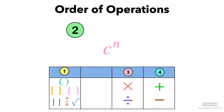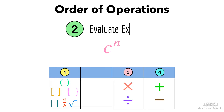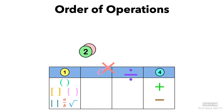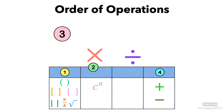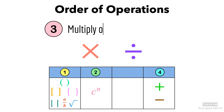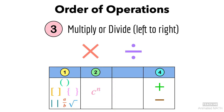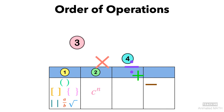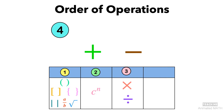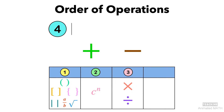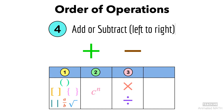After that, we evaluate any expressions that use exponents. Then, we perform multiplication or division in order from left to right. Last, we do addition or subtraction in order, also from left to right.